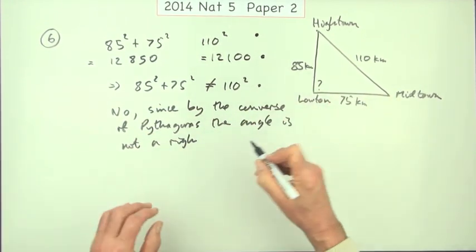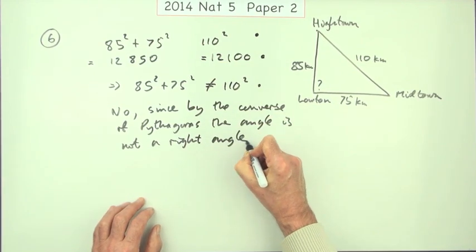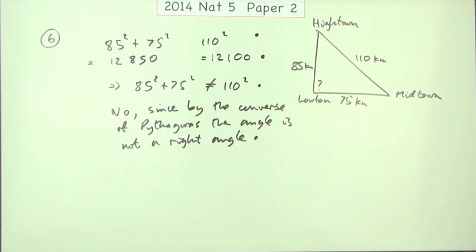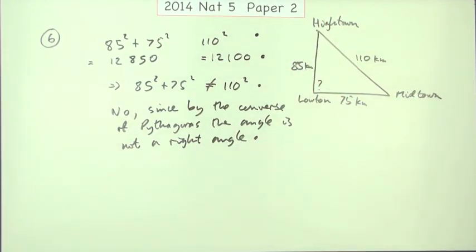That's what happens. You get these questions. You've got to demonstrate something and explain your answer. It's not a right angle. Four marks. Now that would be a classical way to use the converse of Pythagoras.